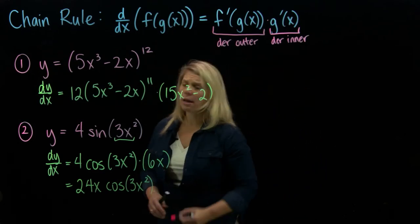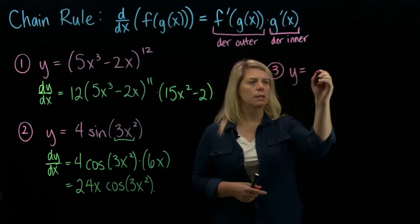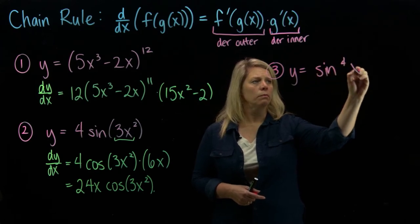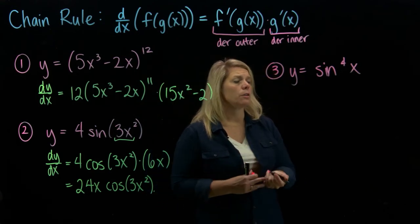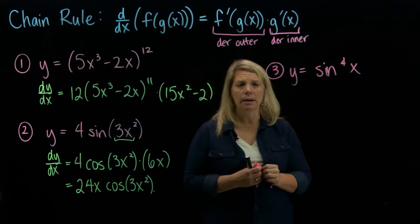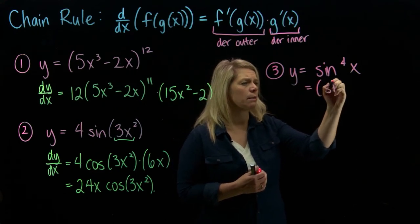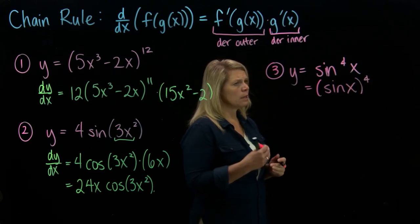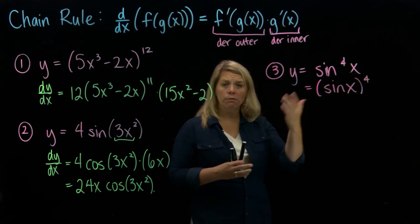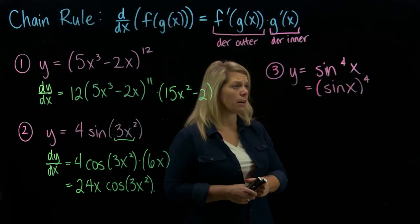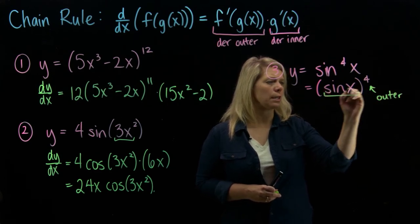I'm going to do one more example. This is the kind of problem that a lot of students mess up, so pay particular attention. We have a power of a trig function. Students are often unclear about what is the outer and what is the inner function. You want to rewrite this and think about what the function means — sine to the 4th of x actually means sine of x, that whole thing, to the 4th power. When you rewrite it like that, it's easy to see that the outer function is the 4th power and the inner function is the sine function.